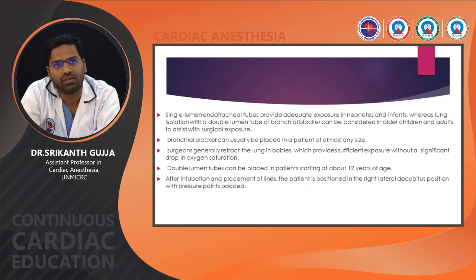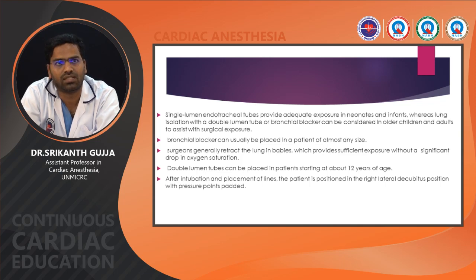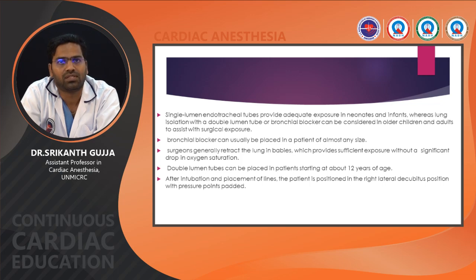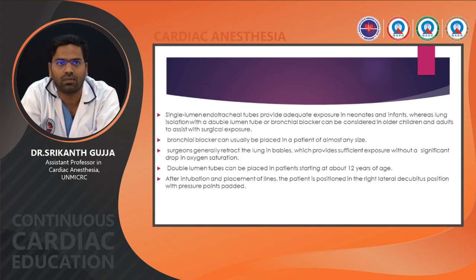A bronchial blocker can be placed in a patient of almost any size. Surgeons usually retract the lung in children, which provides surgical exposure without significant drop in saturation. Double-lumen tubes can be placed in patients above 12 years of age. After intubation and placement of lines, the patient is positioned in right lateral decubitus position with pressure points protected.